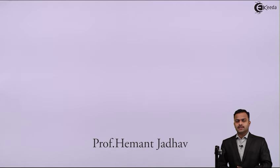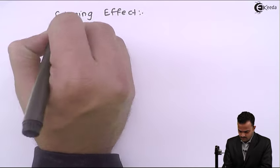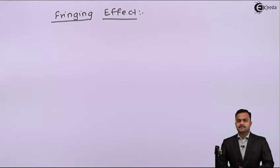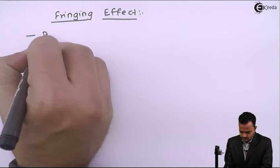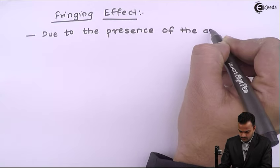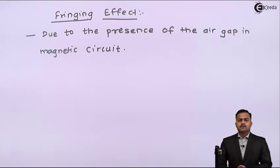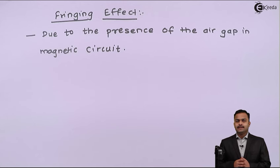Hello friends, in this video we are going to see the concept called fringing effect and leakage flux. The fringing effect results due to the air gap presence in the magnetic circuit. The main consequence of fringing effect is making flux density different in the air compared to flux density in the core.